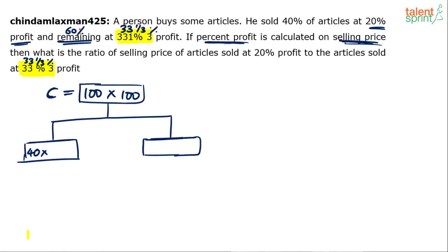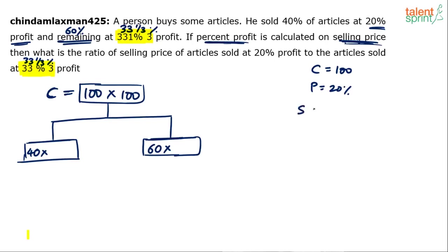Remaining 60% of 100 is 60 articles, sold at 33⅓% profit. Again, 33.33% does not mean selling price is 133.33 — there will be a new selling price. You have to be careful about how to find the selling price. The cost price of each article is 100. Profit equals 20% of selling price this time, not cost price. Selling price equals cost price plus profit.